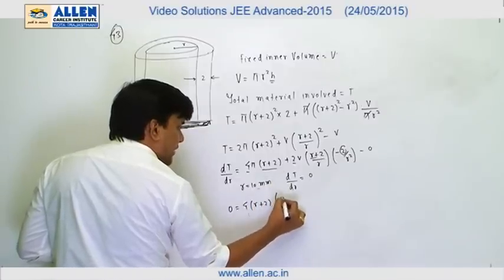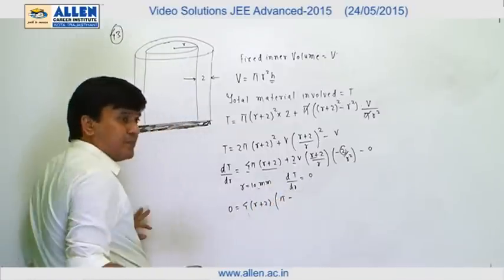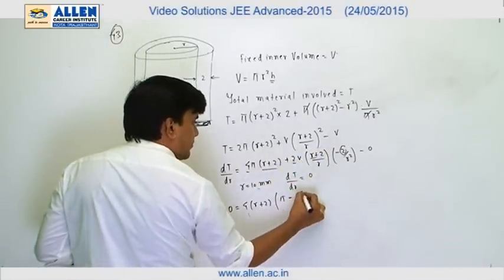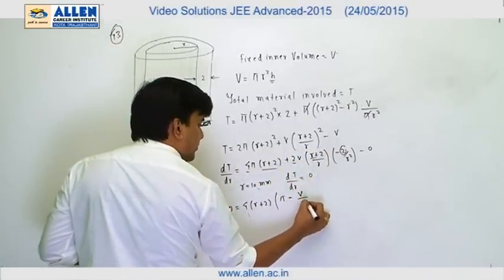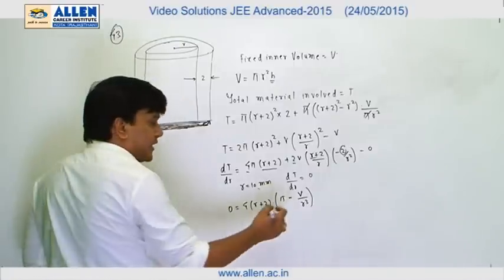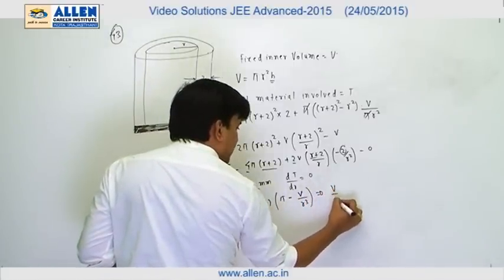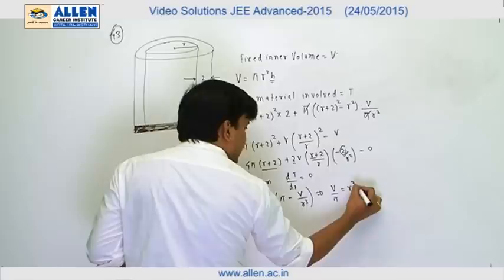So the first term is π. This we can see is 4 out, so this is v upon r³, and r is 10 here. So we can see v/π equals r³, that is 1000.